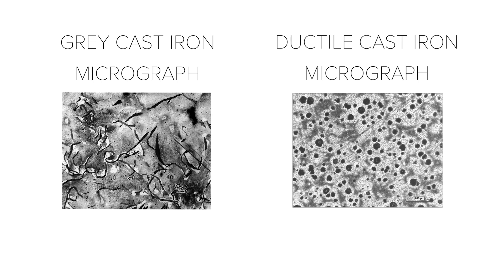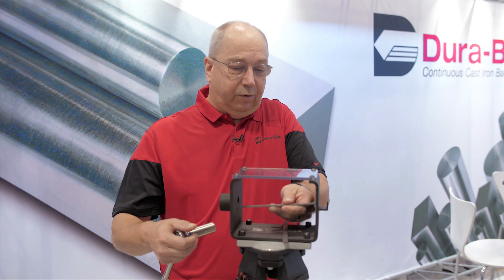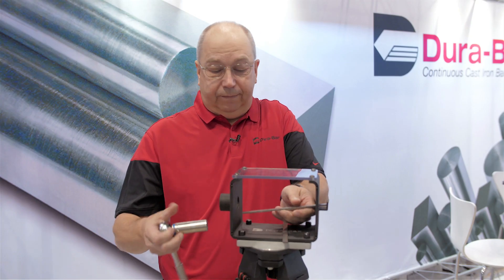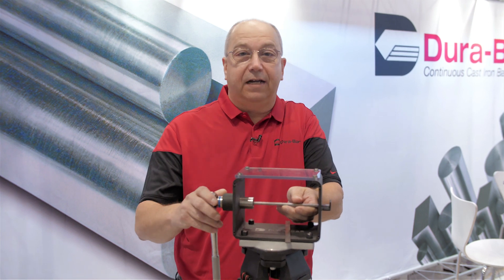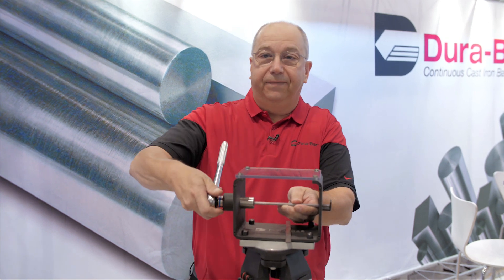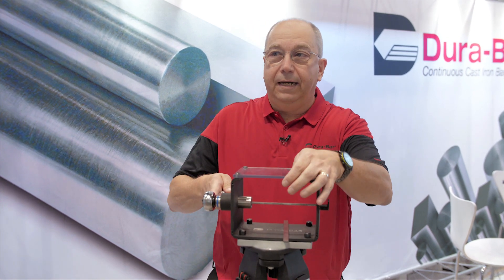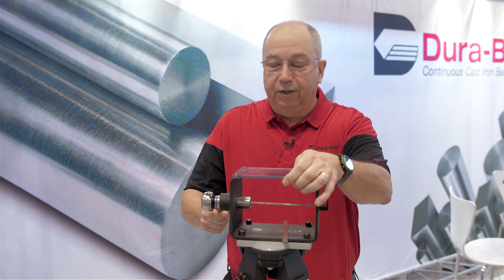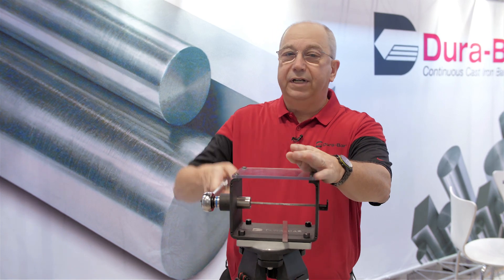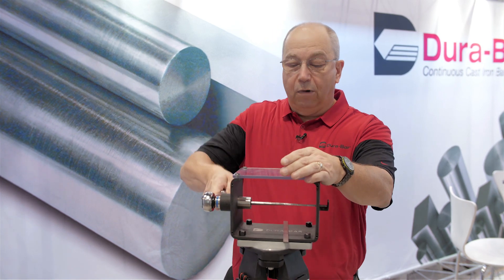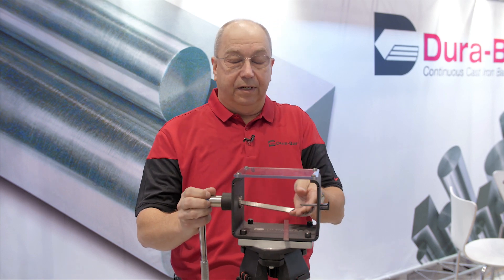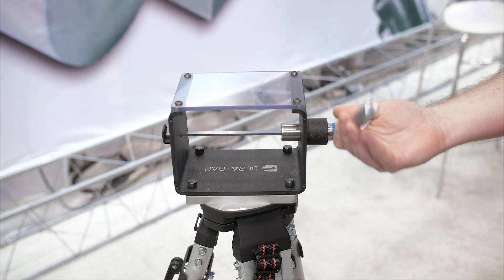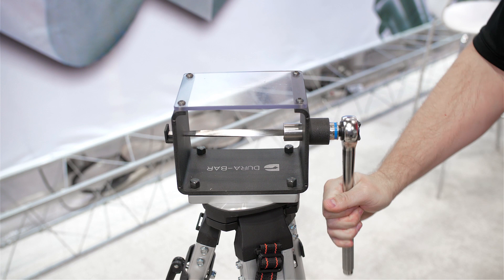The common perception of cast iron is that it is brittle, and that's what we're going to show you here. This test strip is made of gray iron, or the flake type graphite. You'll notice we're going to be able to move or twist this, but we'll get very little motion before the material fails. This is typically understood as brittleness in cast iron.